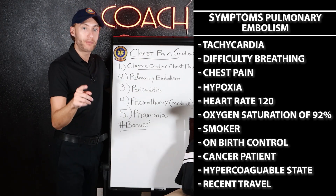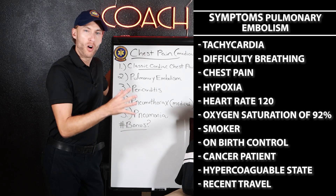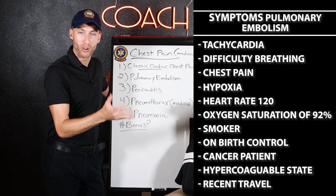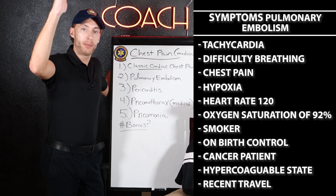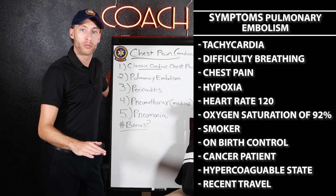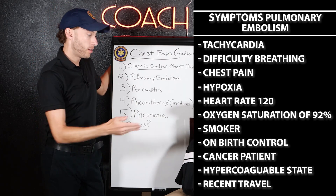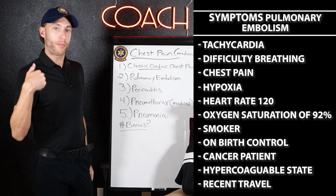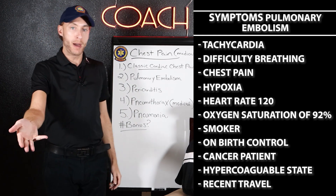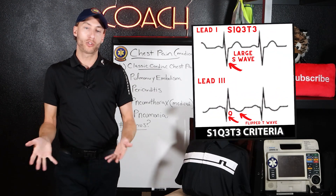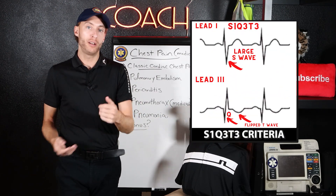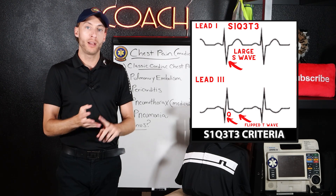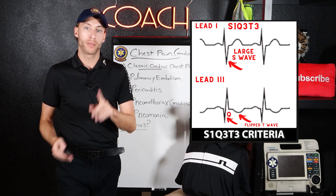The big key signs of pulmonary embolism are chest pain, possibly clear or diminished lung sounds, high heart rate, and low SpO2. For medics, remember your 12-lead EKG criteria: S1, Q3, T3.